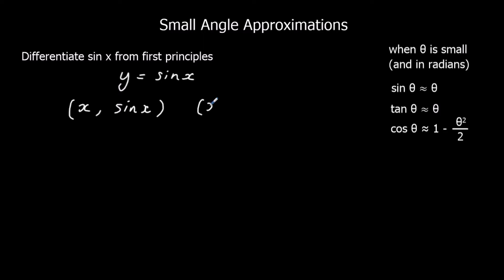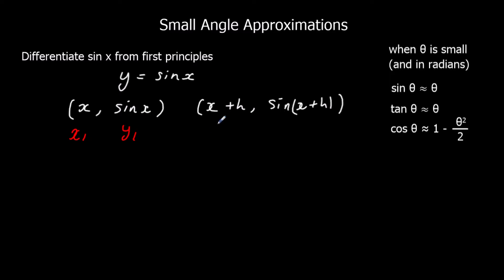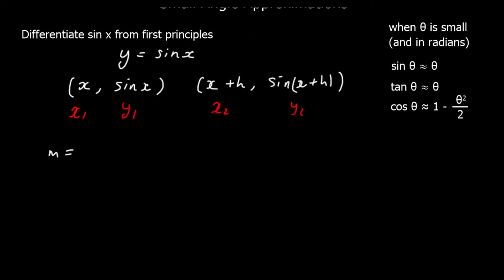If we move x along a tiny amount and call that h, so our x coordinate is x plus h, then y is equal to sine of x plus h. We're going to work out the gradient. So we're going to have x1, y1, x2, y2. And the gradient is the change in y over the change in x.